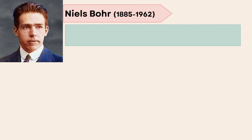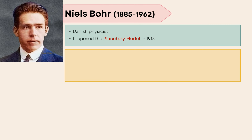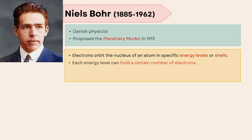Niels Bohr was a Danish physicist who proposed the planetary model in 1913. According to his atomic theory, electrons orbit the nucleus of an atom in specific energy levels or shells. Each energy level can hold a certain number of electrons.